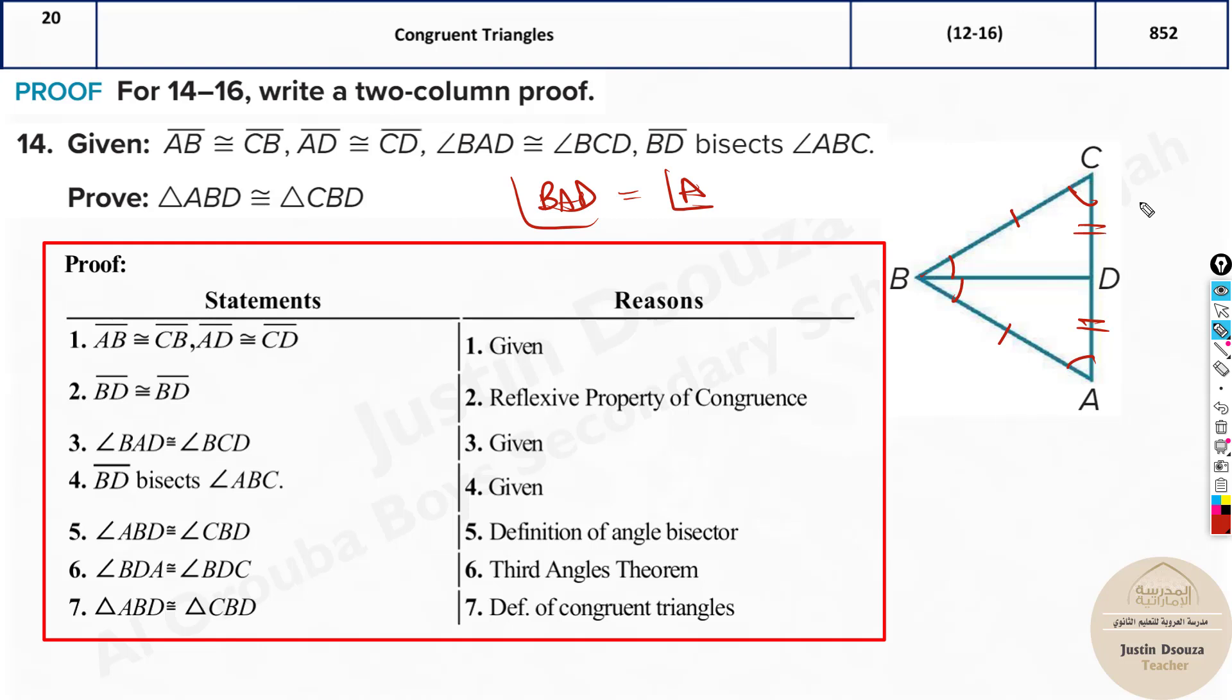BD bisects angle ABC. When you bisect, the angles will be cut equally. We need to prove that triangles ABD and CBD are congruent to each other. Now we know a lot of information. Now if two angles of a triangle are known, this must be equal to the other side. So this is by third angles theorem. See, that's the third angles theorem.